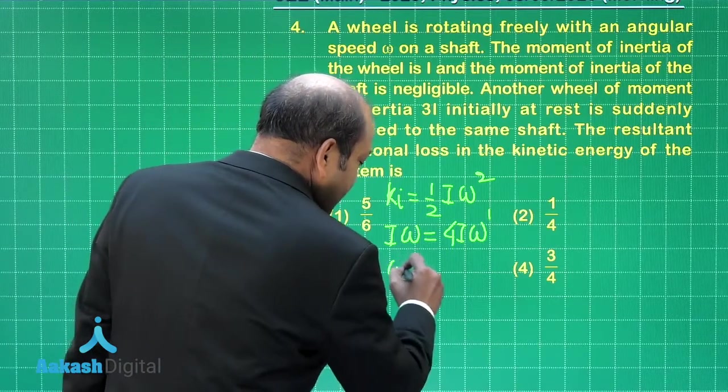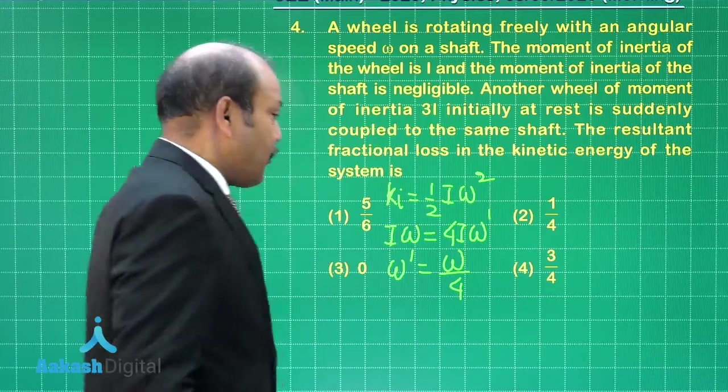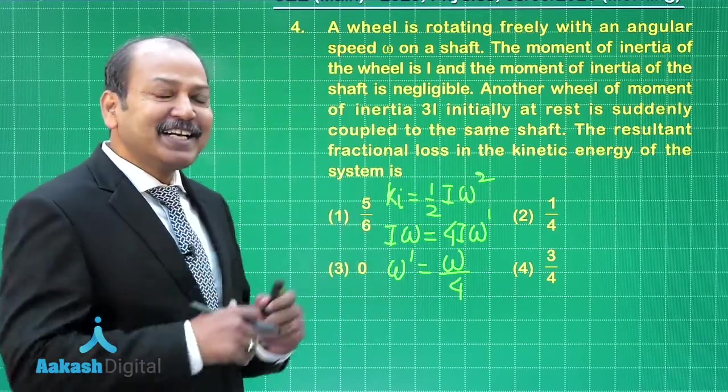Let us put it here. We have omega dash as omega divided by 4.